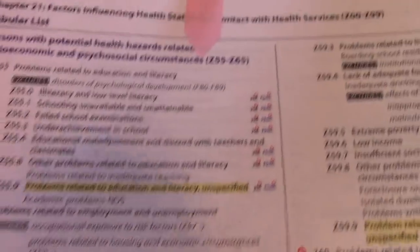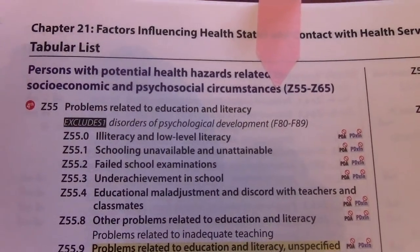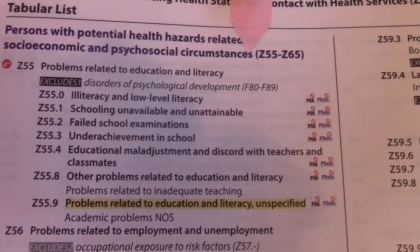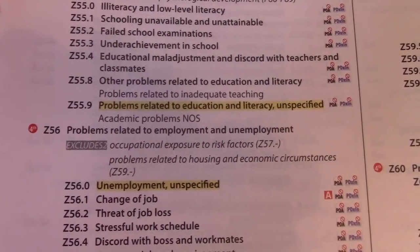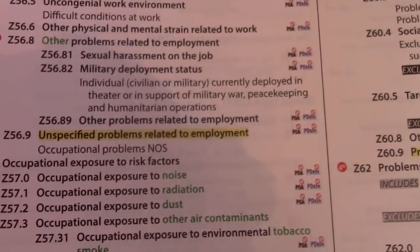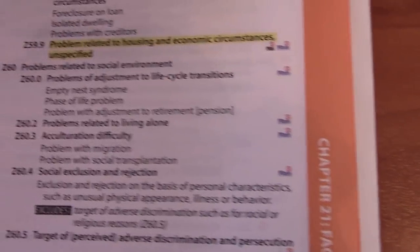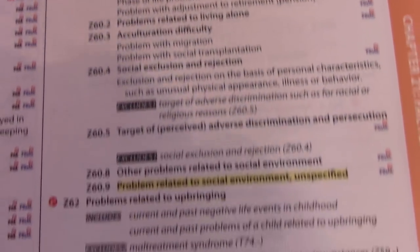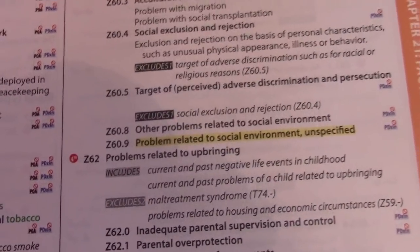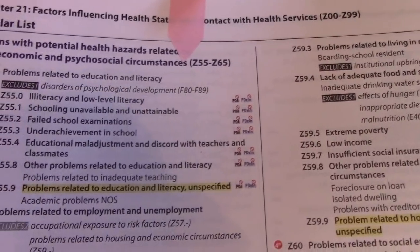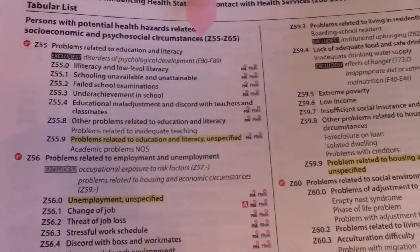Pull out your code books and look at Z65. It says Z55 through Z65 — persons with potential health hazard related to socioeconomic and psychosocial circumstances. Z55 is problems related to education and literacy; Z56 is problems related to employment and unemployment. These are more social services type things — homelessness, problems related to social environment, adjustment cycles, problems related to upbringing. So the social services aspects are found under Z55 through Z65, and although social services — not the MD — would document this, these are conditions we can actually add in our coding.